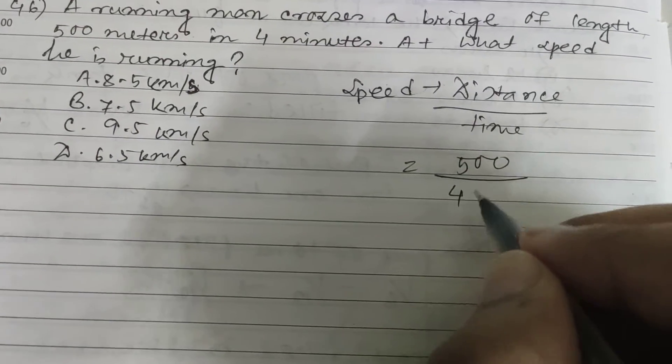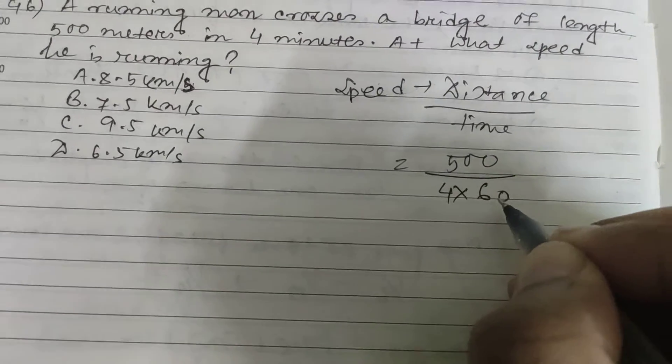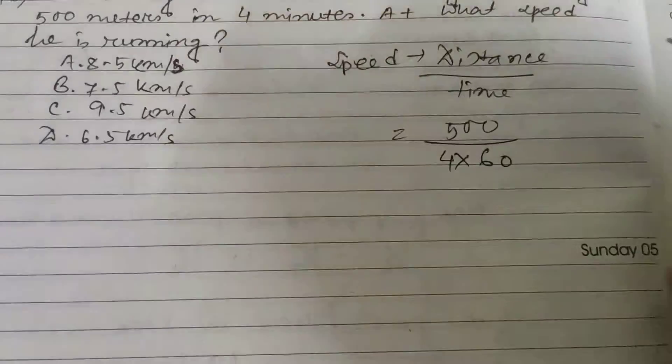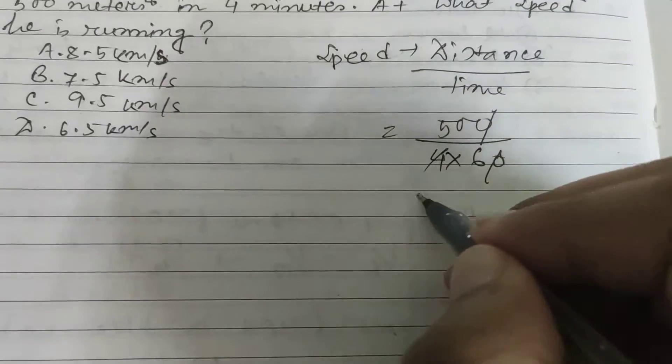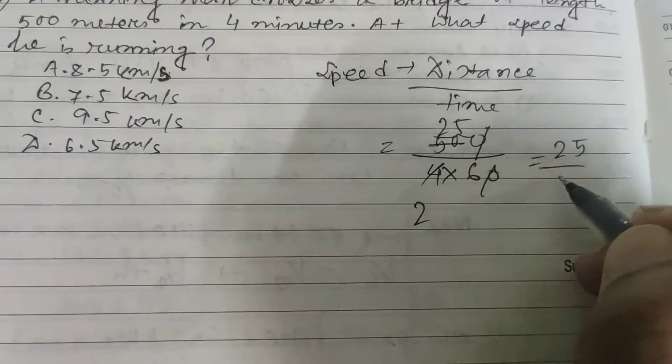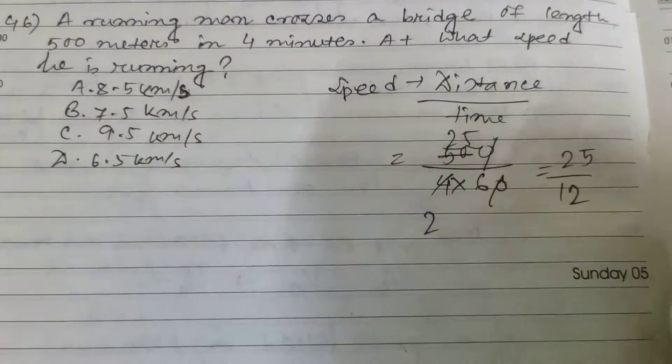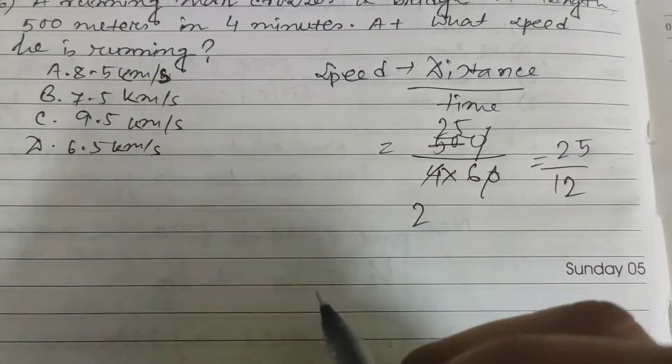Four minutes - to convert it into seconds just multiply by 60. So this is 500 divided by 240, which simplifies to 25 by 12. This is meter per second. Now convert it into kilometer per second.